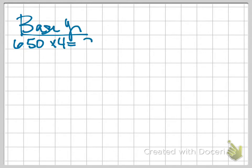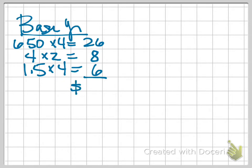So I'm going to start with the cost for my base year, and so that would be the $6.50 times four for my movie tickets, or $26. $4 times two for my popcorn, so that'll be $8. And then $1.50 times four for the sodas, which is $6. And so my total cost of the basket in the base year is $40.